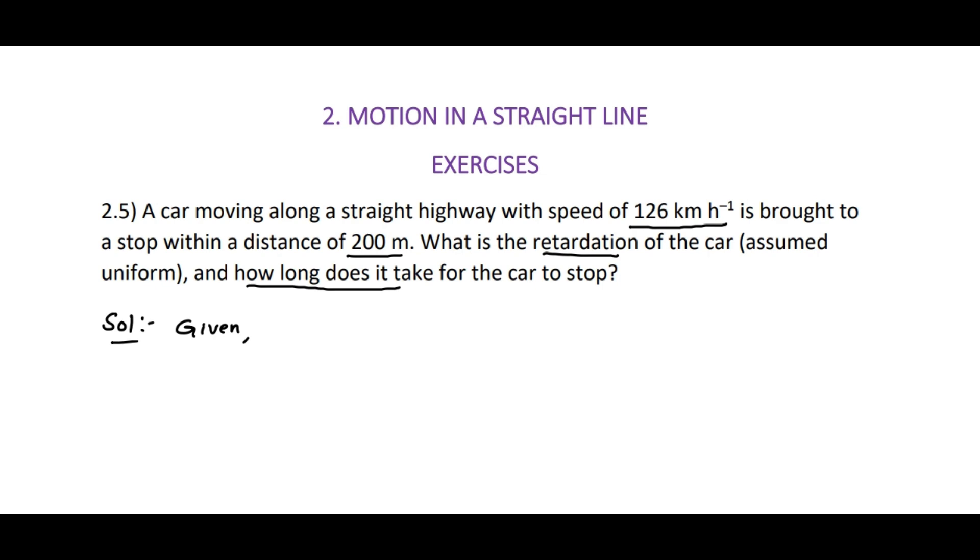According to this data, the given values: initial speed u equals 126 kilometers per hour. If we are converting this into SI system, that is meters per second, 126 times 5 by 18, because 1 kilometer per hour equals 5 by 18 meters per second. Its value is 35 meters per second.